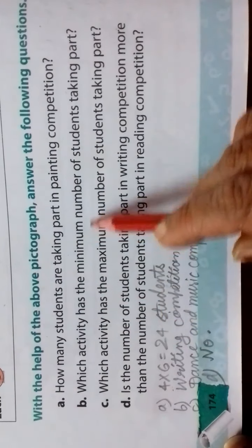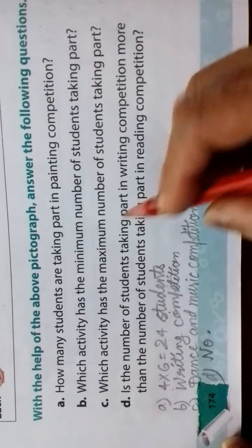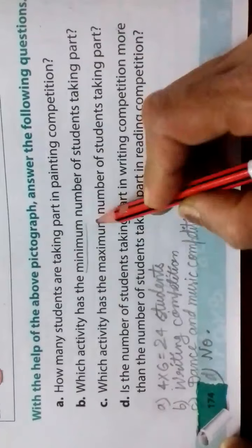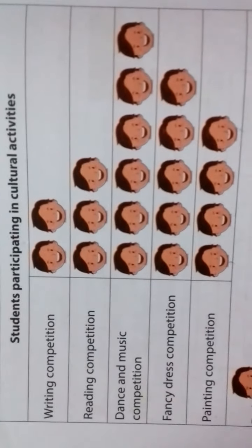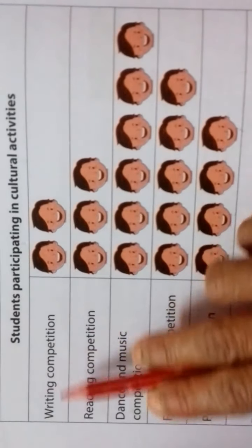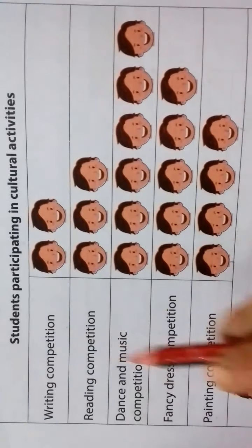Which activity has minimum number of students taking part? Minimum means less. So the smallest kids are part in which activity? So the smallest in the chart is writing competition. So second answer is writing competition.